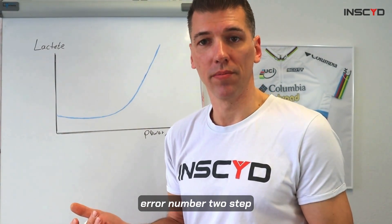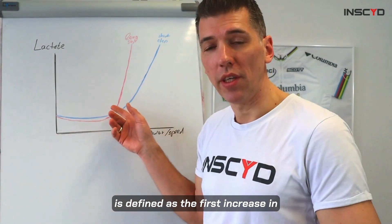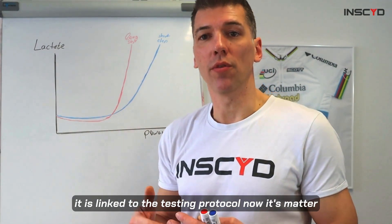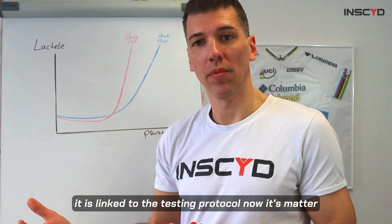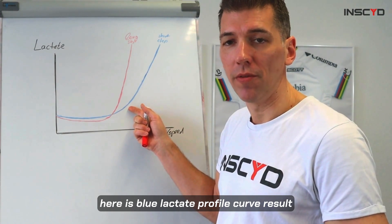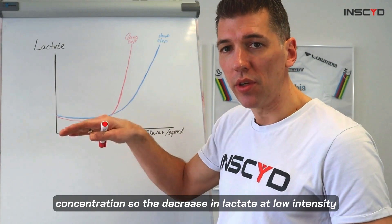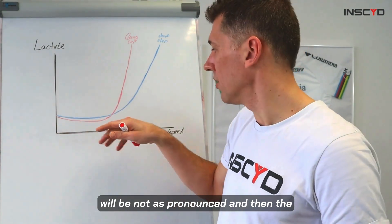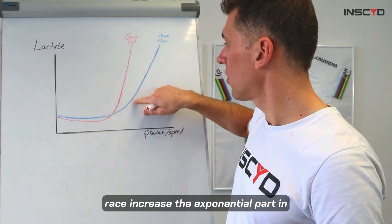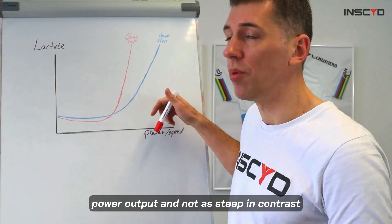Error number two: step duration, or duration of an increment. LT1 is defined as the first increase in lactate concentration and is therefore linked to the testing protocol. Short step duration — shown here as the blue lactate profile curve — results in not as low a lactate concentration at low intensity. The decrease in lactate at low intensity will not be as pronounced, and the exponential increase in lactate comes later, meaning at a higher speed or power output and is not as steep.